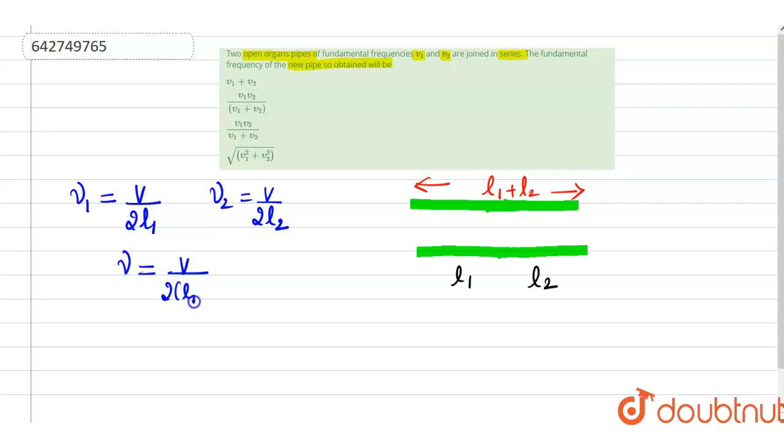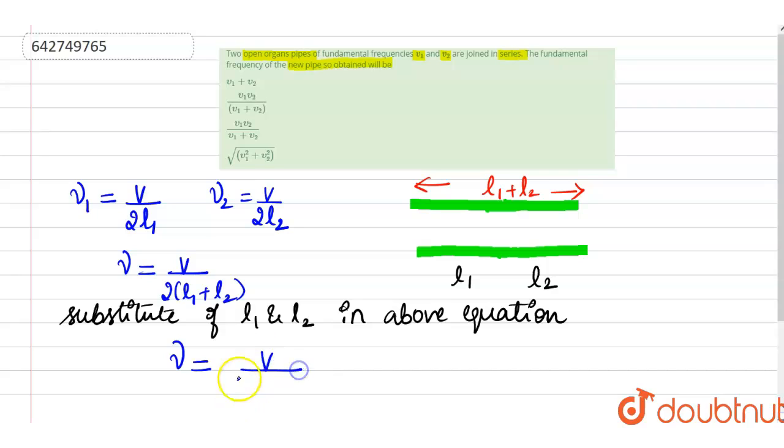Now how to simplify further? To simplify further, substitute the values of L1 and L2. So if I am substituting, what will we get? After substitution, ν will be equal to v/2 into, in place of L1 I will be writing v/(2ν1), in place of L2 I will be writing v/(2ν2).